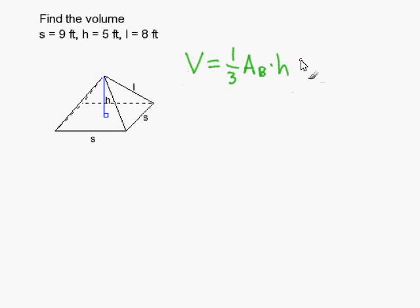So now that we understand this equation, we just go ahead and substitute. So we have one third times nine times nine. And it's nine times nine because we have the nine here. And this is a square, so it's just side times side.